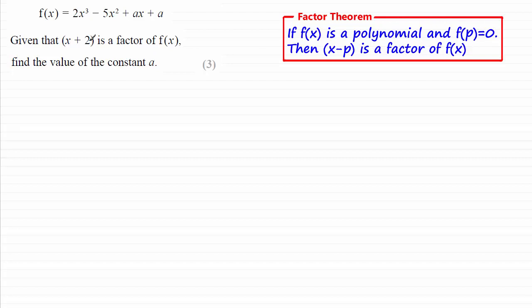So when I look at the fact that we're given x plus 2 as a factor of f of x, then the value of p would have to be negative 2. So what I'm saying then is f of minus 2 should equal 0.